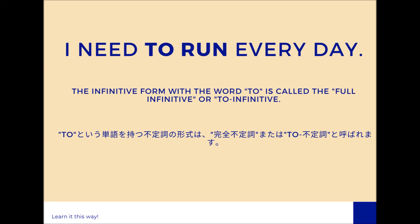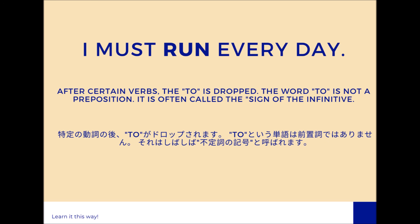For example: 'I need to run every day' — the infinitive form with the word 'to' is called the full infinitive or to-infinitive. The next example: 'I must run every day' — after certain verbs, the 'to' is dropped. Note that the word 'to' here is not a preposition; it is often called the sign of the infinitive.